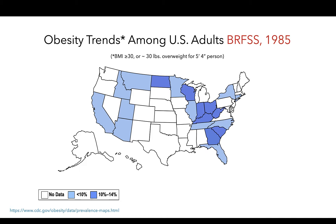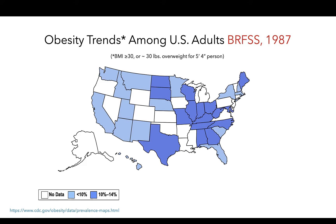Now we'll go through these data year by year to see how this map changes as we advance through time. You'll see the colors of states change as obesity data become available and as the prevalence of obesity changes. So again, we start here in 1985, we see some increase in 1986 in the number of states reporting obesity-related data. 1987 provides even more data from more states and some increases in the prevalence of obesity, as indicated by more darker blue states.